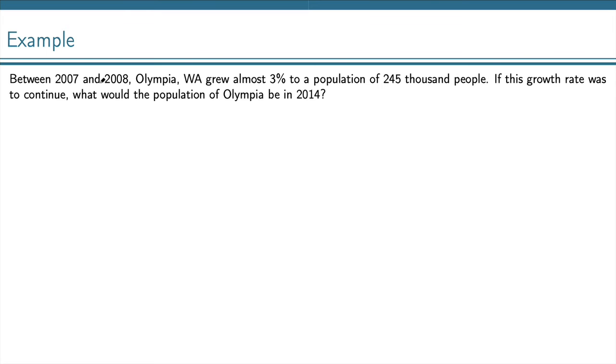Here, we know that our growth rate is 3%, so r is 0.03. Our initial population, P0, that we know is the 245,000 people, and that occurred in the year 2008.